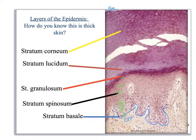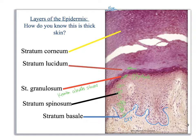Gradually the cells start to flatten moving upward. In the stratum granulosum, cells are definitely getting flatter and also pick up more stain, because keratin absorbs stain, making that layer look darker. Up in the stratum lucidum, the cells are flatter but lighter — even with more keratin, this layer doesn't absorb the stain as well because the membrane is thicker and more waterproof.